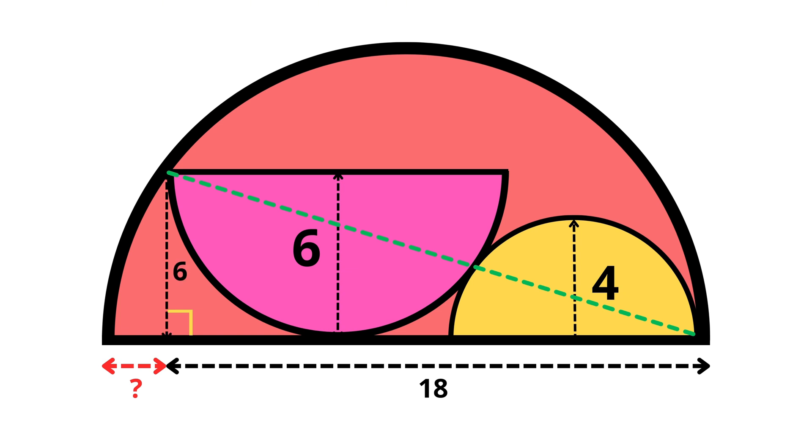So now we can work out the length of the hypotenuse, but we don't need to. Instead, we're going to draw another line and create another right-angled triangle. And you might be thinking, how do we know that's a right-angled triangle? We know because any time a triangle is inscribed within a semicircle, with one side as the diameter, the angle opposite the diameter will always be 90 degrees.